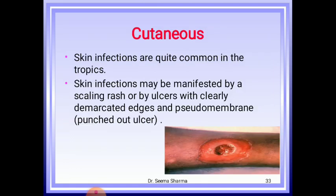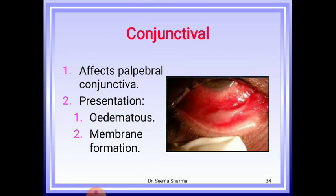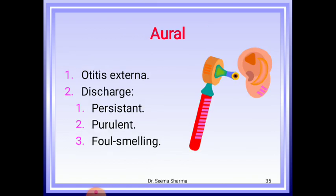Cutaneous diphtheria: skin infections are quite common in tropics. It may be manifested by a scaling rash or by ulcers with clearly demarcated edges and pseudomembranes, also known as punched-out ulcer. It often appears as a secondary infection over previous skin abrasion or infection. Conjunctival diphtheria affects the palpebral conjunctiva, presenting with edema and membrane formation. Oral diphtheria involves otitis externa; discharge may be persistent, purulent, or foul smelling.